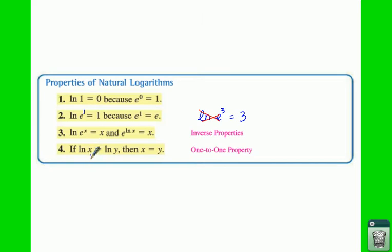Same as any other log, if you get a natural log of x equal to a natural log of y, then that just means whatever is over on the left is equal to whatever is on the right. So in this case you would just say x is equal to 8 and solve it like that.